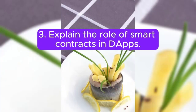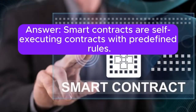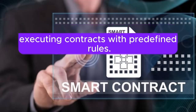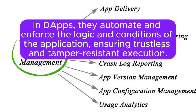3. Explain the role of smart contracts in DApps. Answer: Smart contracts are self-executing contracts with predefined rules. In DApps, they automate and enforce the logic and conditions of the application, ensuring trustless and tamper-resistant execution.